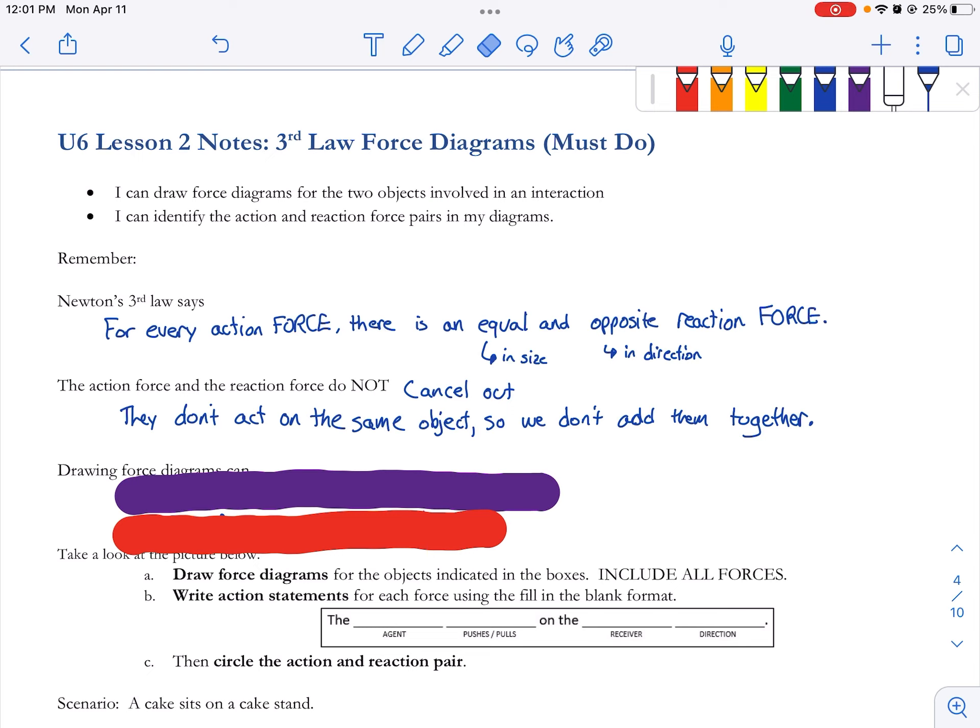the forces that don't act on the same object, we don't add those together. When we find the net force we find the force on one object. So we don't add them together if they're not on the same thing.